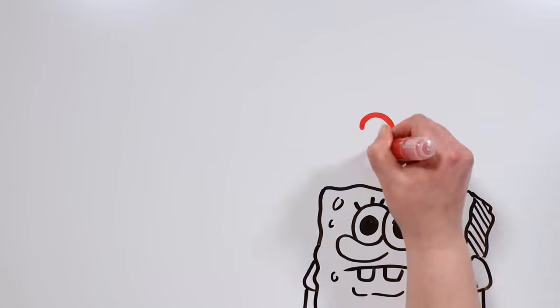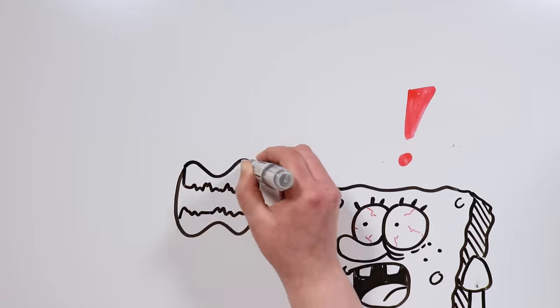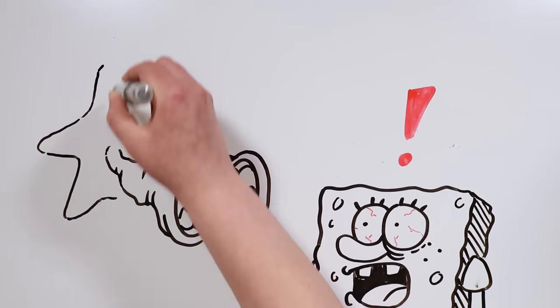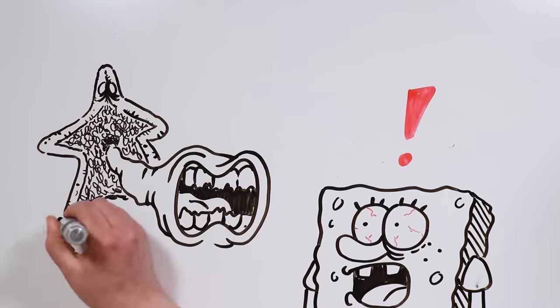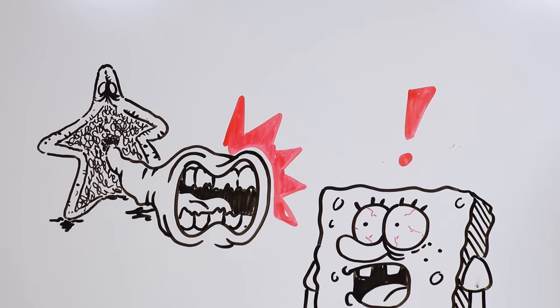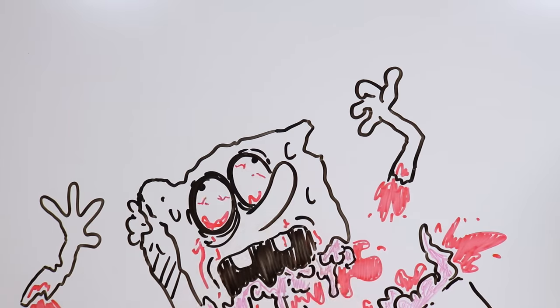Bob was dumbfounded, and he would soon realize he had just discovered the most evil side of the starfish who he thought was his best friend. Patrick then extended some sort of tentacle from his insides and pierced SpongeBob's body. Shortly after, Bob collapsed, completely destroyed.